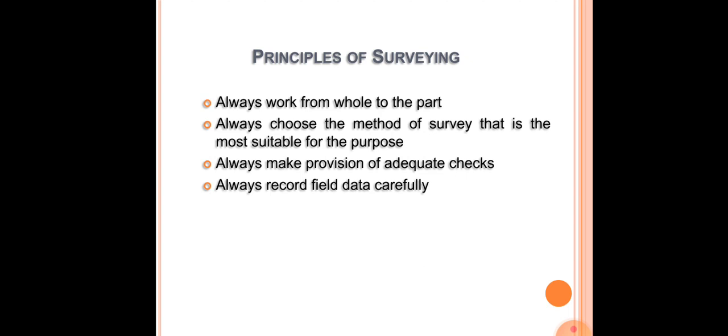The first principle is to work from whole to part. Whenever we do surveying, we have to always work from whole to part — I will discuss that in detail. The second principle is to always choose the method of survey that is most suitable for the purpose. Whenever we plan to do a survey, there may be various methods, and the one adopted should be the most suitable for that particular purpose.